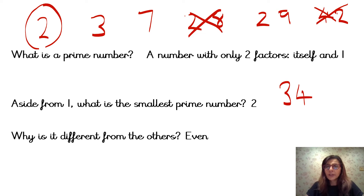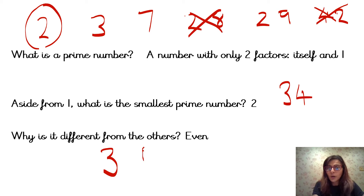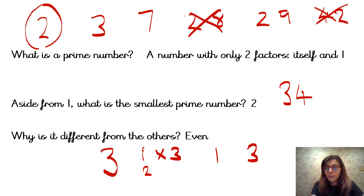So what makes a number prime is that the only two factors are itself and the number 1. Let's look at the number 3. What are the factors of 3? I'm going to always start with the number 1: 1 times 3. So we've got 1 and 3 as its factors. Can I do 2? No, because 2 is an even number. 3 times 1 — but I've already done it, so I don't need to repeat myself. So this has only got 2 factors. Yes, the number 3 is a prime number.